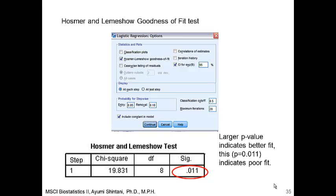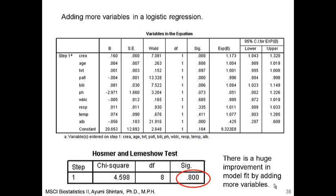The poor fit is because we only included creatinine level. Let's redo the regression by adding more variables: age, heart rate, PA-FI ratio, bilirubin level, pH, white blood cell count, respiratory rate, temperature, and albumin level. After including all these variables, the Hosmer-Lemeshow test improved significantly. For the goodness of fit test, we look for a p-value greater than approximately 0.2 to 0.5. The improved result indicates a good fit — in fact, an extremely good fit.